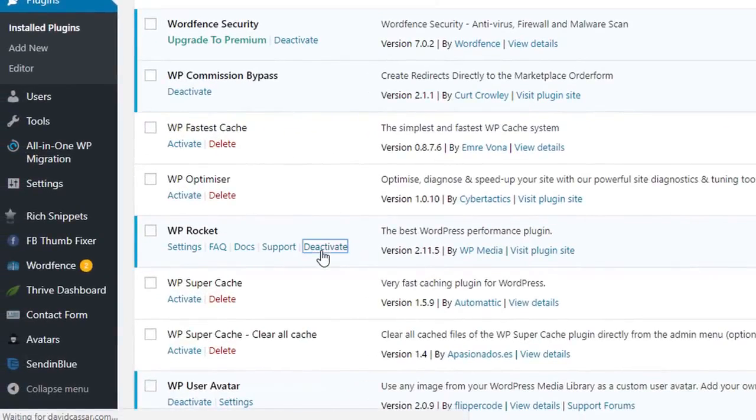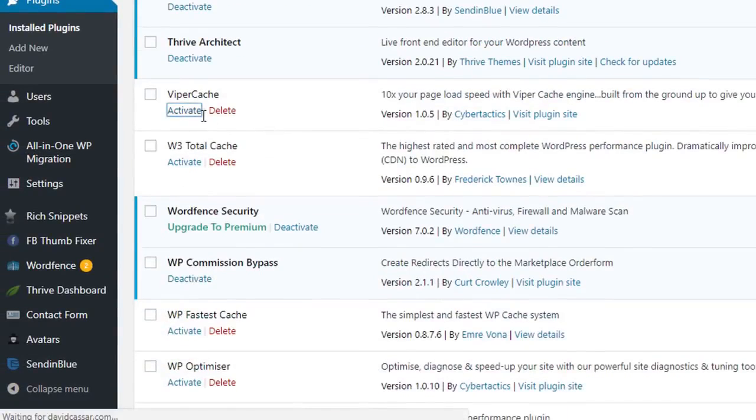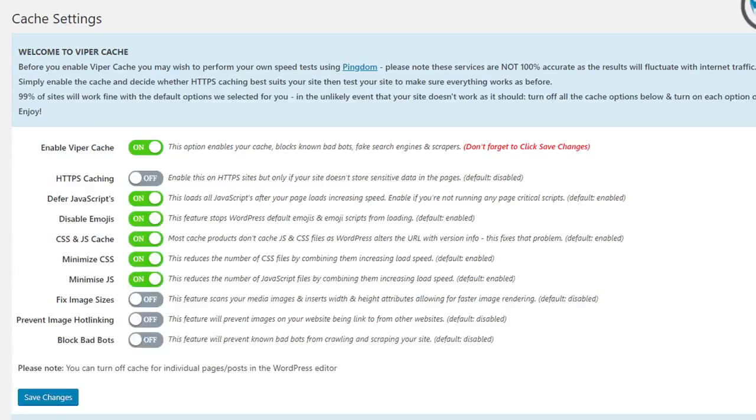Now let's deactivate WP Rocket and let's activate ViperCache. Again, we're going to be totally hands off and just enable the plugin's default settings. As you can see, there is no complicated settings in ViperCache. It's literally just one setting and that's if your website is running SSL or not. So it's very simple.